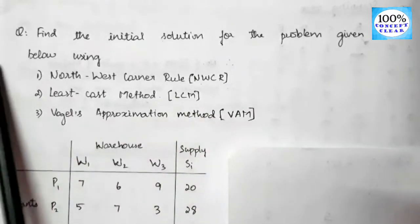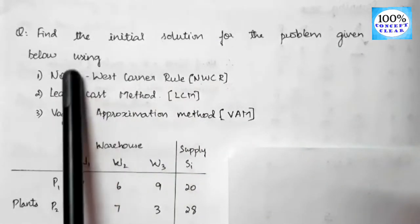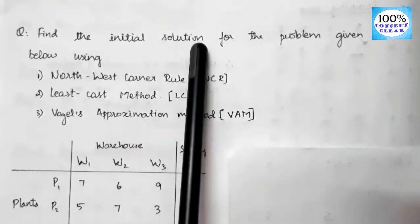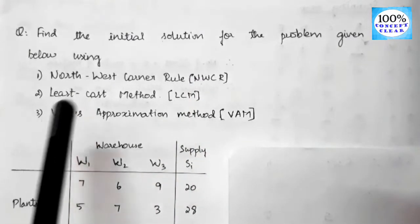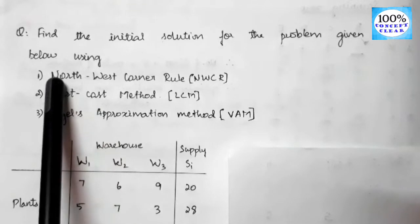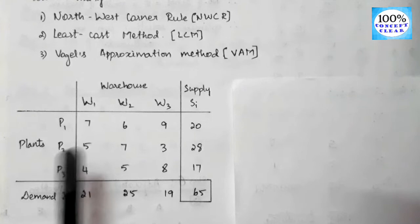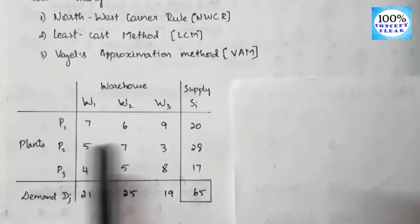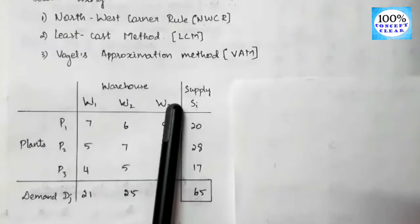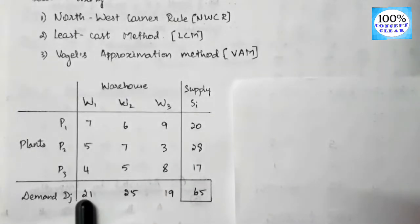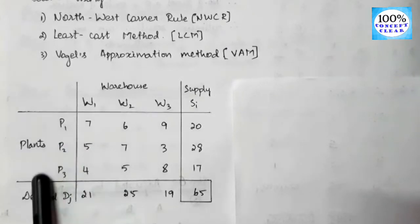Here is the question: find the initial solution for the problem given below using all three methods. In this video, we are going to use the North West Corner Rule method. See the matrix — we have three plants and the supply of those plants are given, and three warehouses with their demand. The manufacturer is going to transport goods from plants to warehouses.